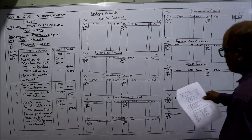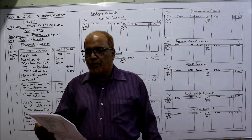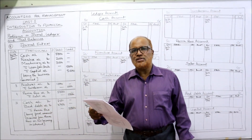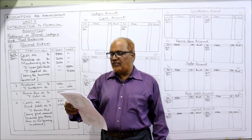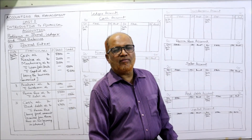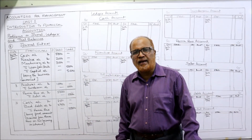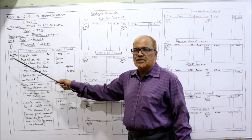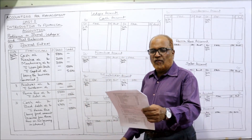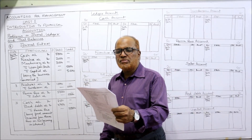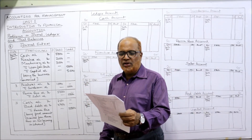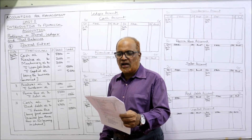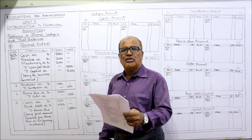Now see the eighth problem: prepare journal and post them into ledger. A few transactions are given for January 2019. First of all we have to pass the general entries, and secondly we have to post them into ledger accounts. Journal format: date, particulars, LF, debit, credit. On January 1st, James has started business with cash 5000, furniture 2000, machinery 3000, and a loan taken from his uncle of 5000. These are the assets and liabilities with which he started the business.